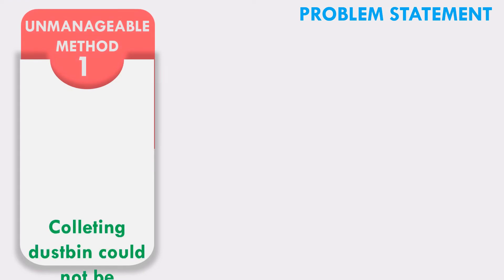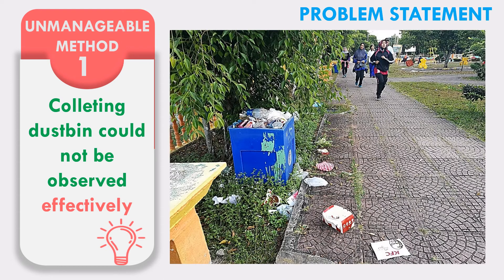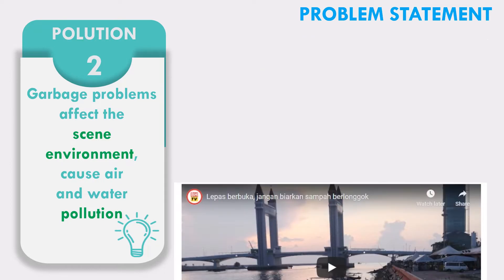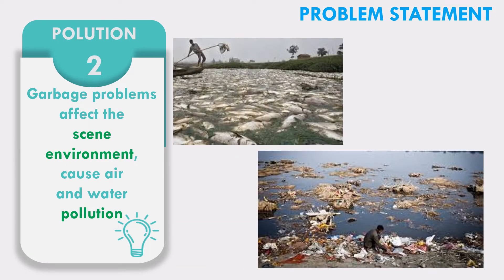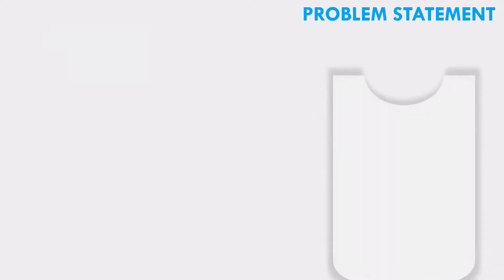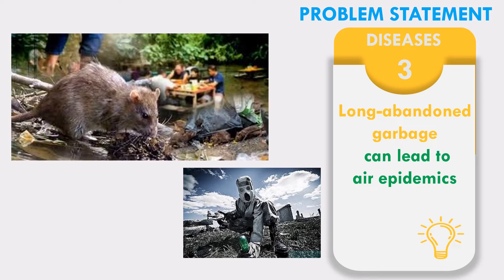The first problem statement is unmanageable method — collecting bins could not be observed effectively. The second problem statement is pollution: garbage problems affect the environment, causing air and water pollution. The third problem statement is diseases, as long-abundant garbage can lead to an epidemic.